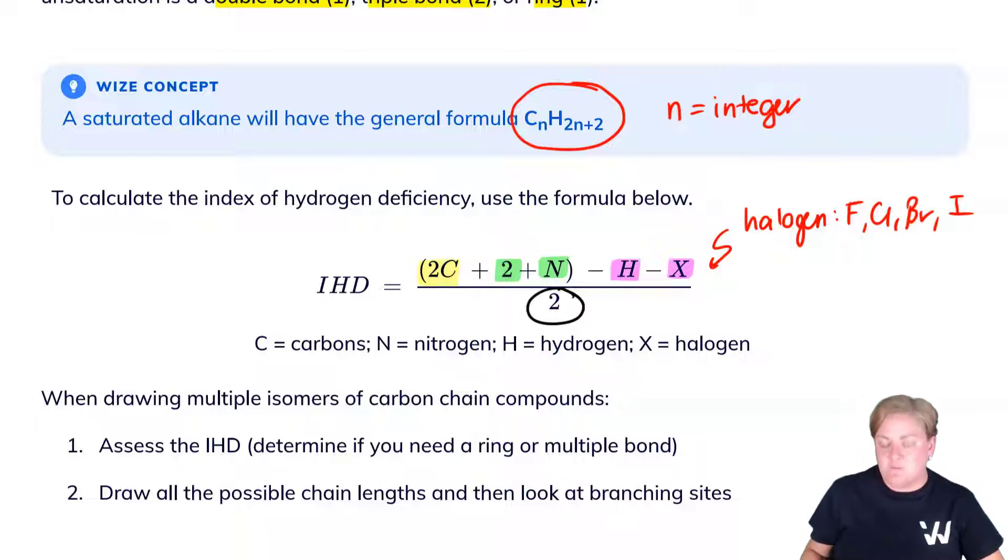When you're drawing a molecule, then, you want to be able to assess the index of hydrogen deficiency to determine what degrees of unsaturation you have. Should you be incorporating a double bond or a ring? Should you be thinking about triple bonds? And then you want to draw all the possible chain lengths and look at branching sites. With constitutional isomers, you can end up with a lot of versions of the same molecule. A really good self-check is to always come back and double-check your degrees of unsaturation or your hydrogen deficiency index to see whether or not you're following the right structure.